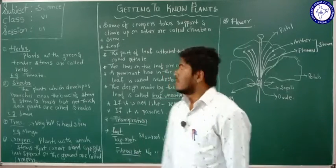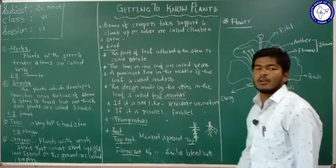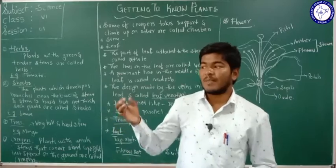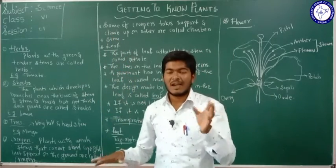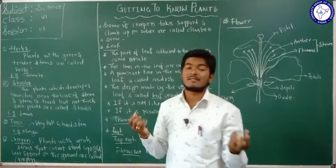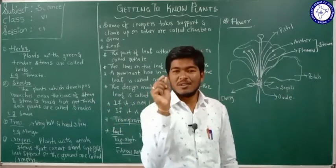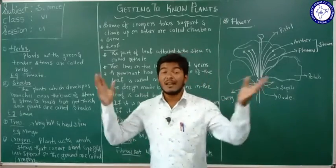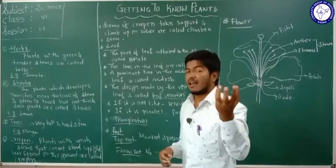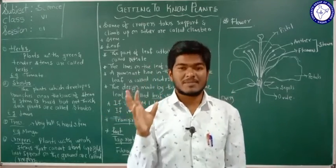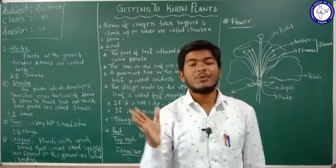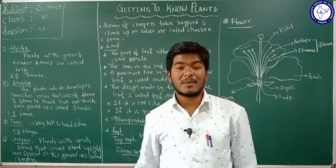Hi students, welcome to the science class. In today's session, under the chapter 'Getting to Know Plants,' we are going to study different types of plants. When you look around in your ground, different types of plants are present — some are very tall, some have a very small height, and some spread over the land. Some plants have flowers, some don't. Some have big flowers, some have small flowers, and leaves also vary in size. Based on the characters of the plants, we are going to divide them into different types.